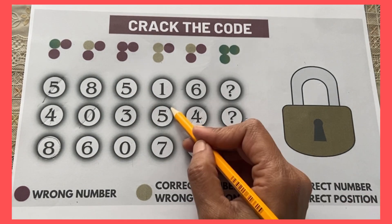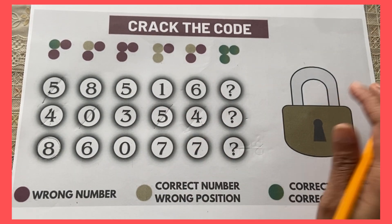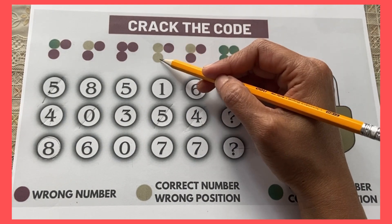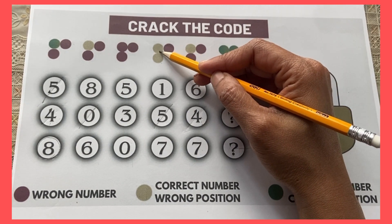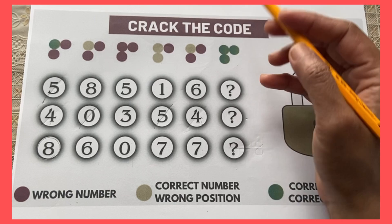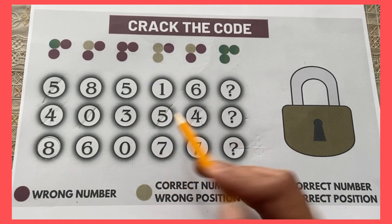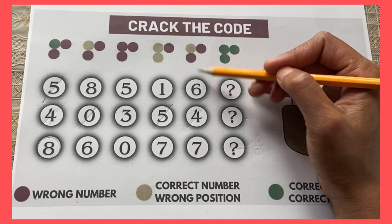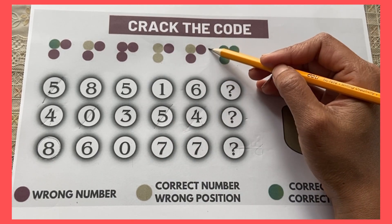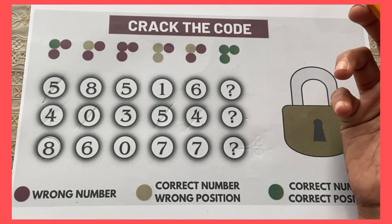In this clue, 5, 3, 0 are crossed out. This clue says two correct numbers in the wrong position and one wrong number — we have identified that 5 is wrong. And here, two wrong numbers are there and one number is correct but in the wrong position.